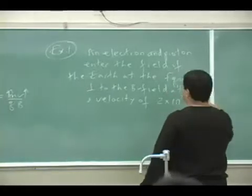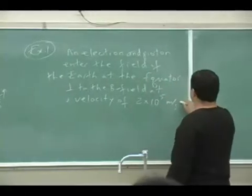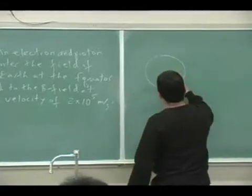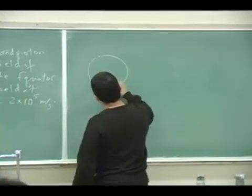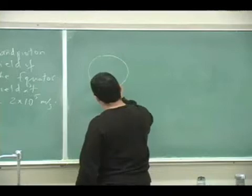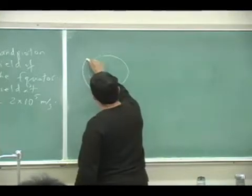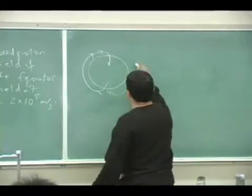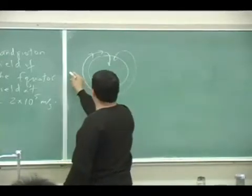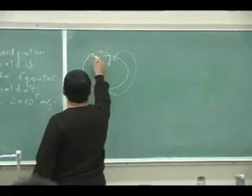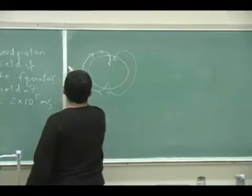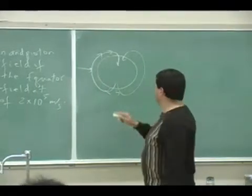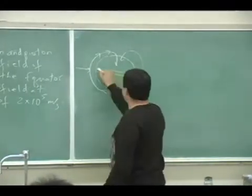These charges come towards the Earth with a velocity of two times ten to the fifth meters per second. If the Earth looks like this, the field of the Earth comes from the south pole and goes towards the north pole. Let's say this electron is coming in like this.